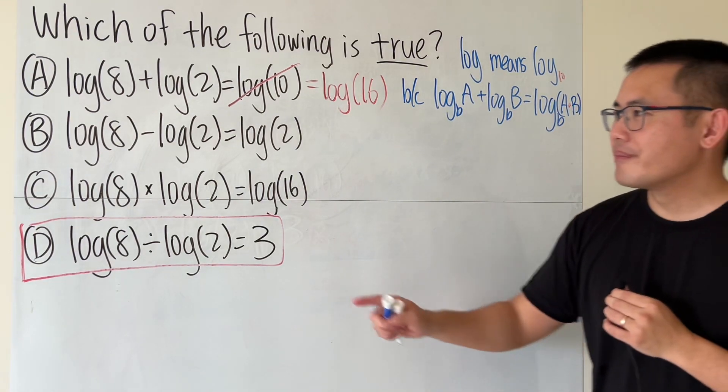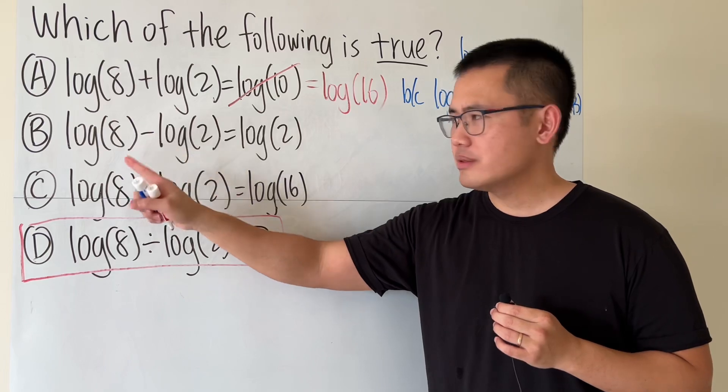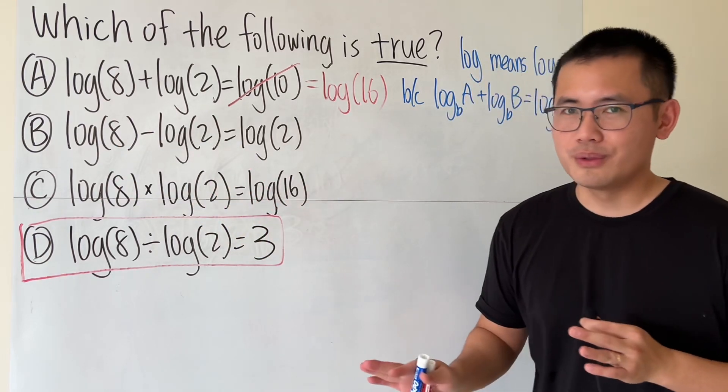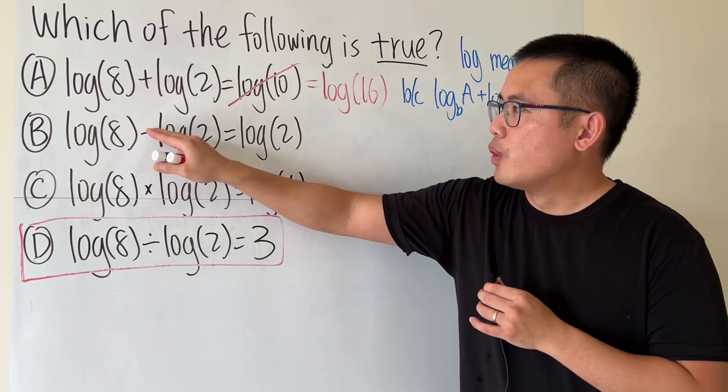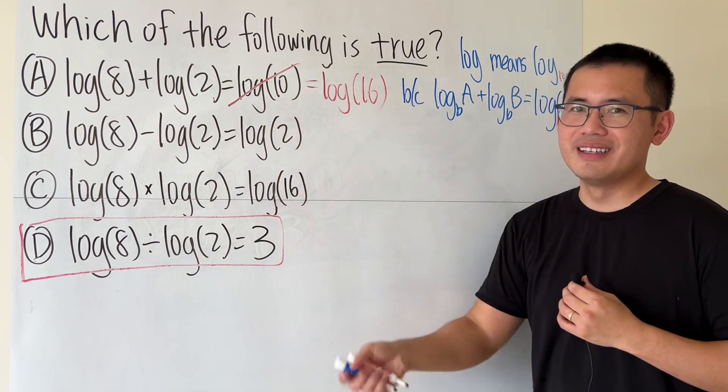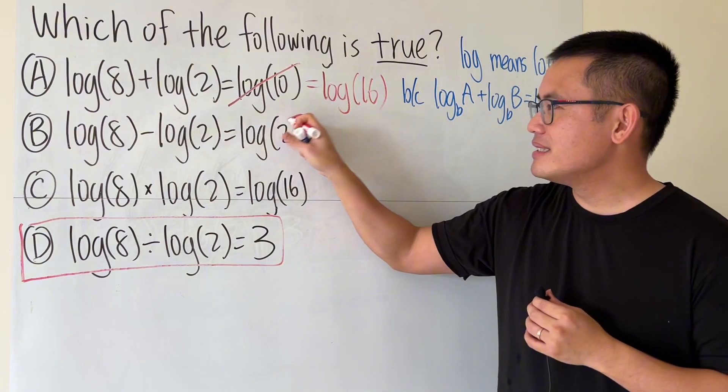Now the next one we have a subtraction. 8 minus 2, it's not 2. No, no, no, no. Same thing like this, when we have a subtraction we are not supposed to... it doesn't even make sense, this is so wrong.